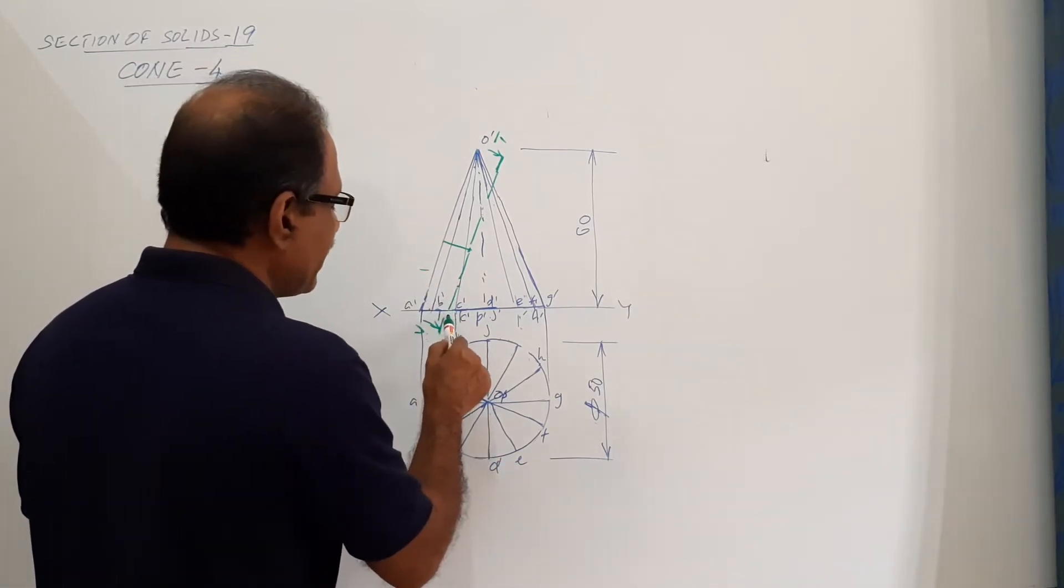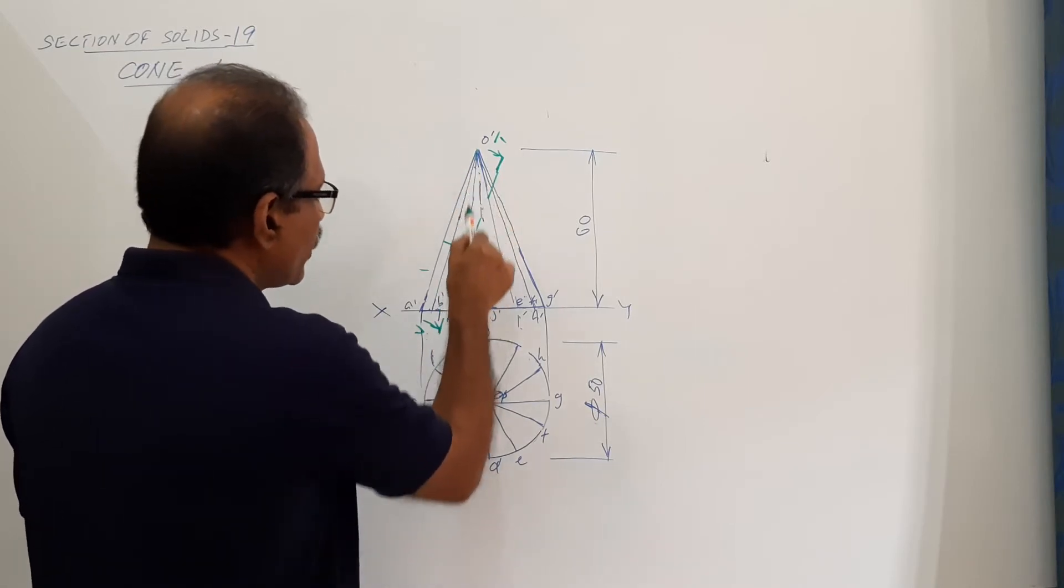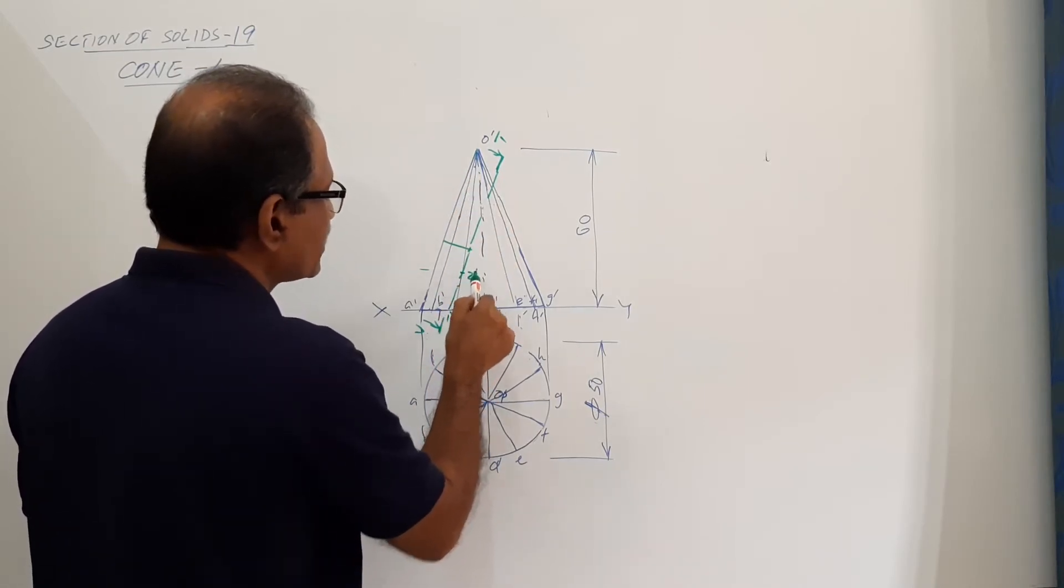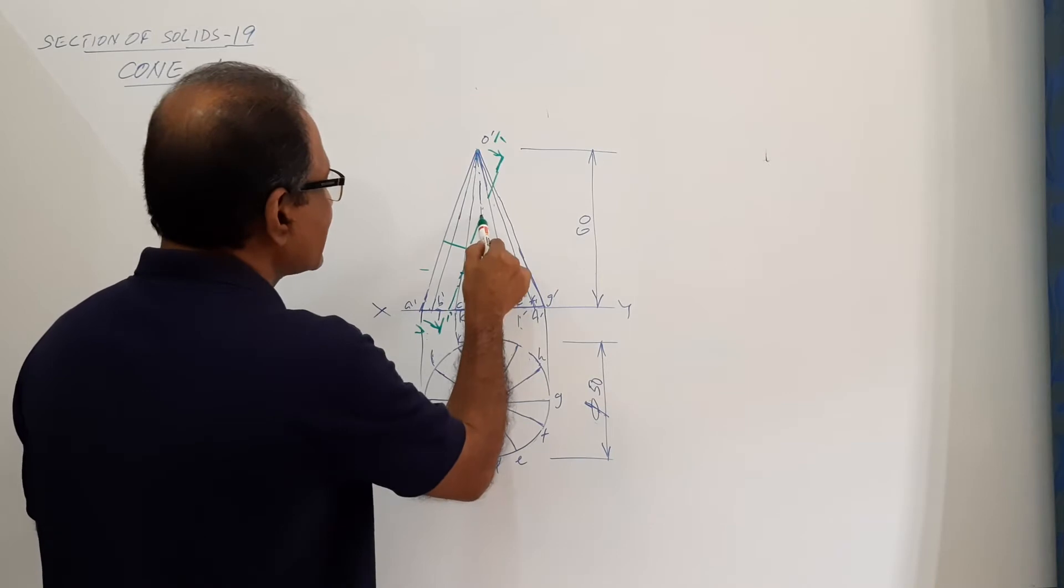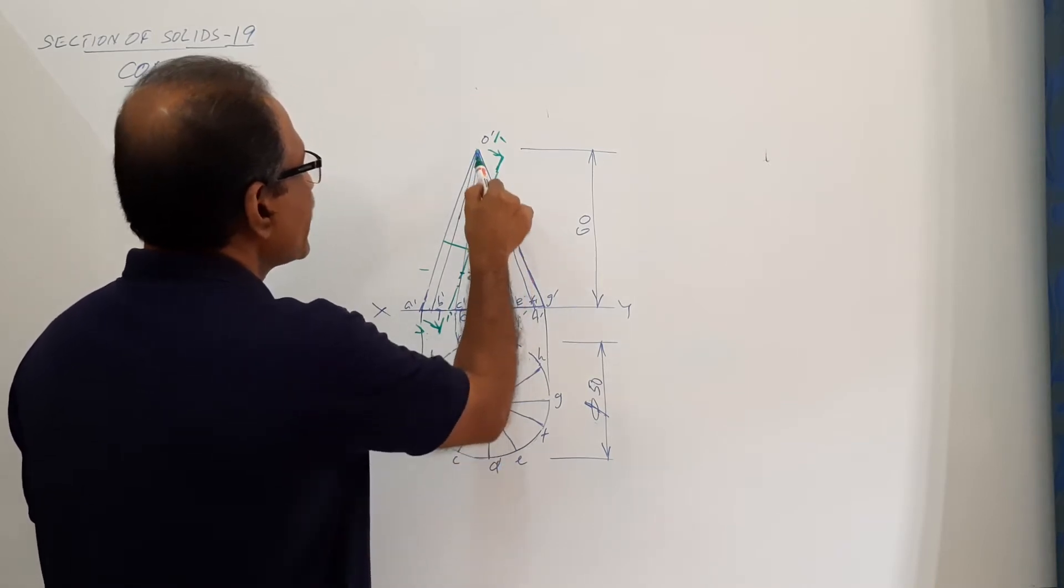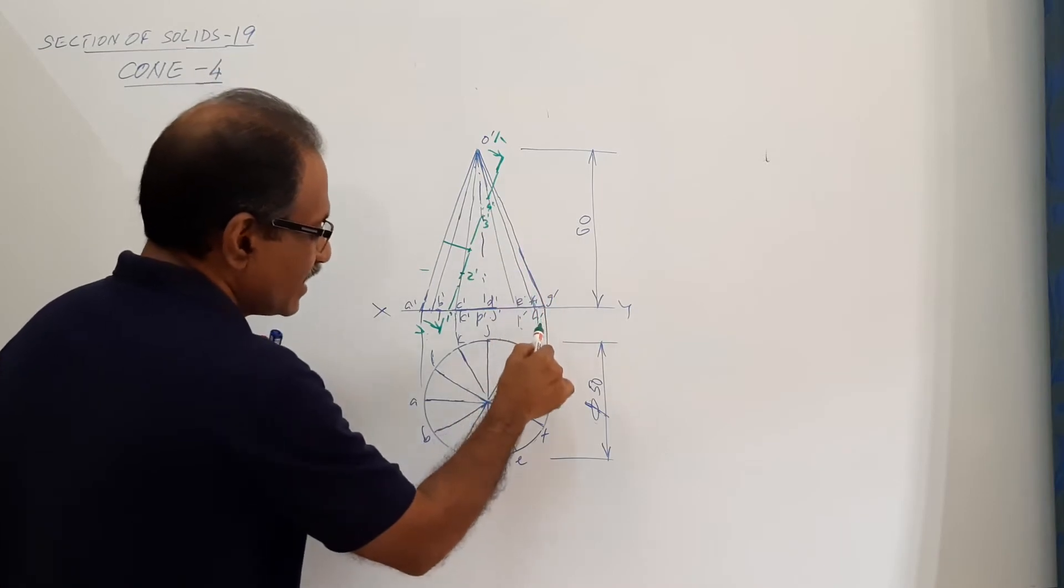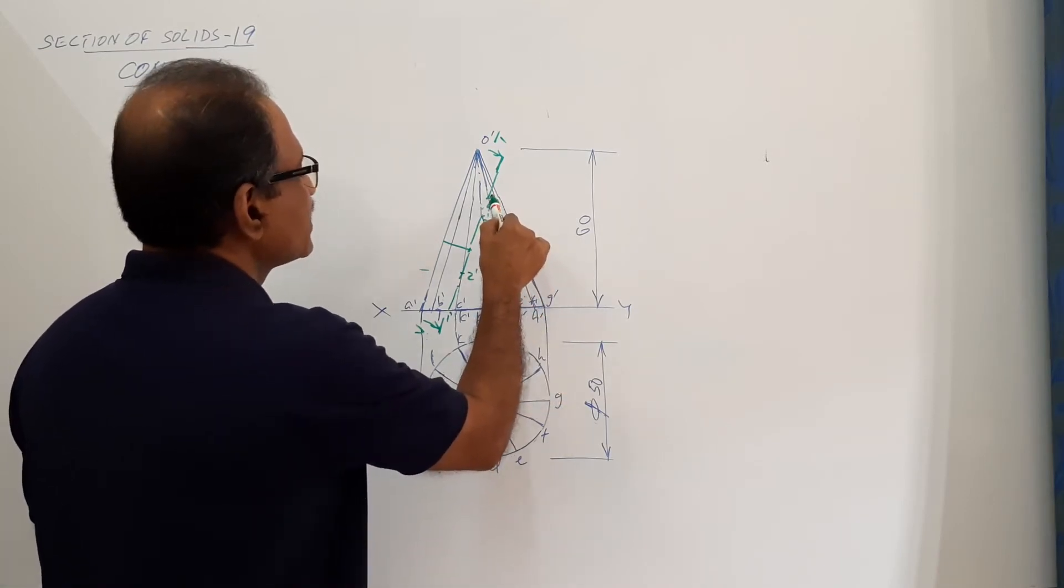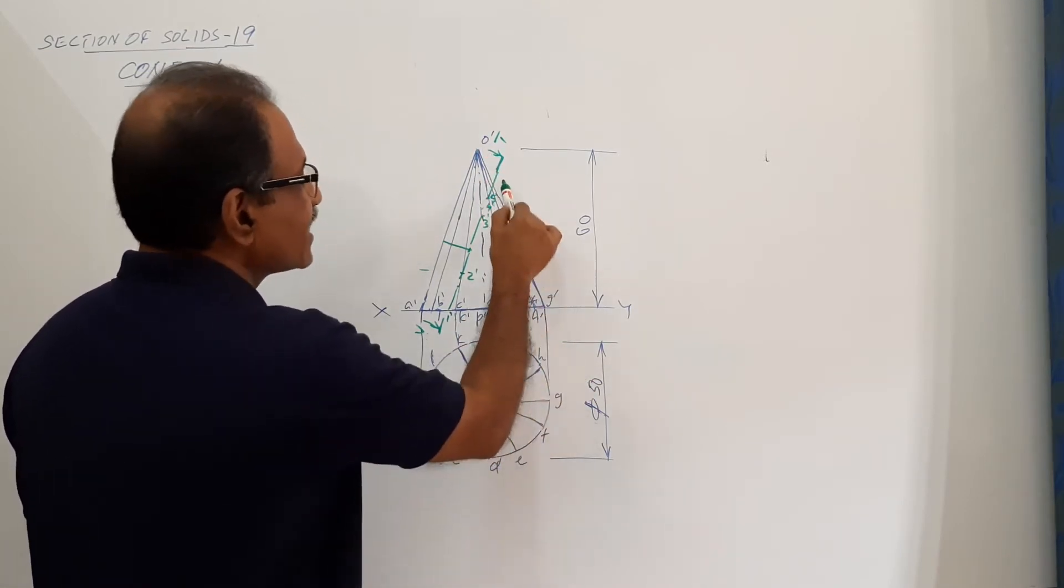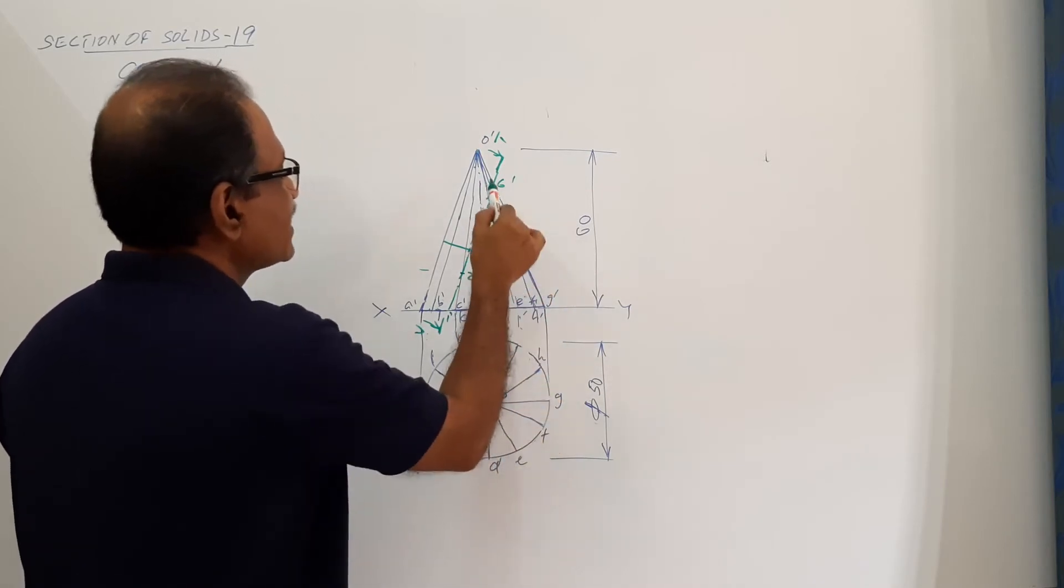Where on the circuit? Cut the base at one dash, O dash C dash at two dash, O dash D dash at three dash, O dash E dash at four dash, O dash M dash at five dash, O dash G dash at six dash, O dash H dash at seven dash.